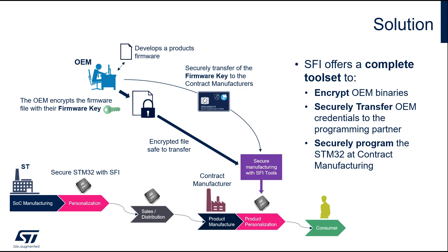In an SFI-enabled manufacturing, the OEM creates and manages his own secret firmware encryption key, used to encrypt the application code in the form of an SFI package. He then securely transfers the key to the CEM, which uses it for the encryption of the package during manufacturing. ST produces secure RSS-enabled STM32 parts provisioned with a unique private key and certificate, available for purchase by the CEM through regular sales and distribution channels.